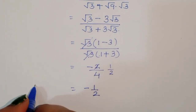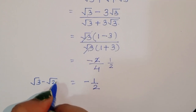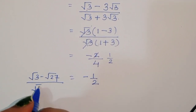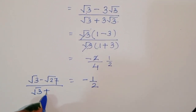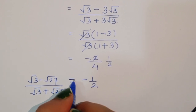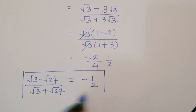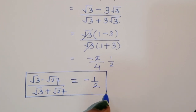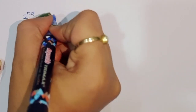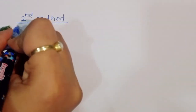So the value of square root of 3 minus square root of 27, divided by square root of 3 plus square root of 27, is equal to minus 1 by 2. This is the solution by the first method. Now we are solving by the second method.